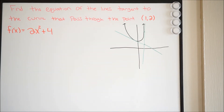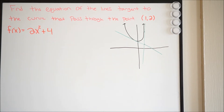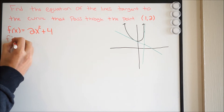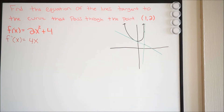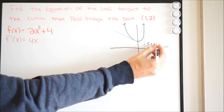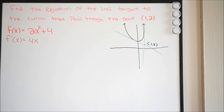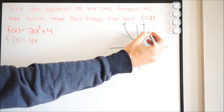In order to do this problem, we have to use our knowledge of derivatives. If I take the derivative of this function, it's going to tell me the slope of any tangent, where x depends on where it is on the curve. So f prime is going to give me 4x. I'll label my points: we have (1, 2), and then the unknown point on the curve we can call (x, y).